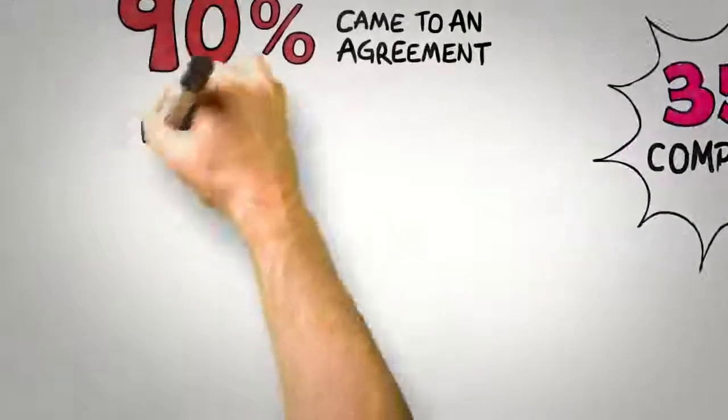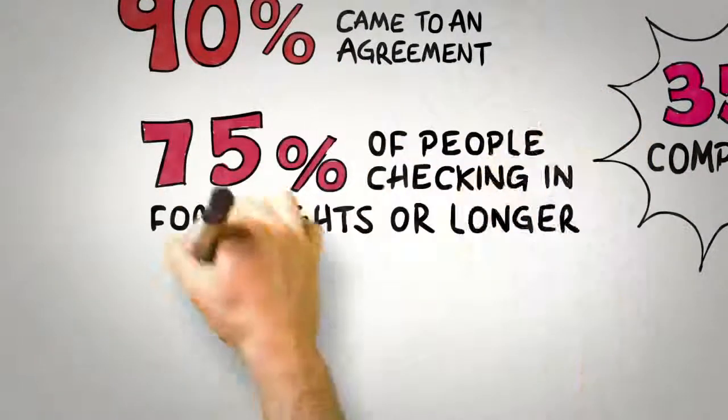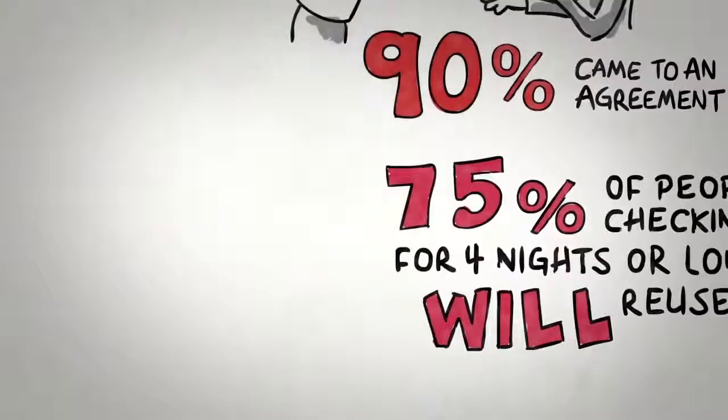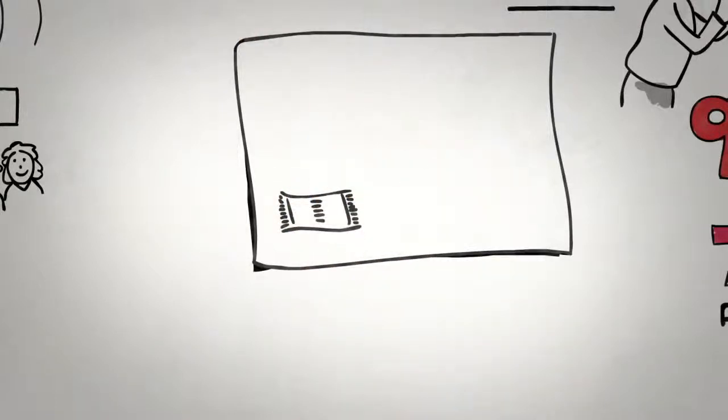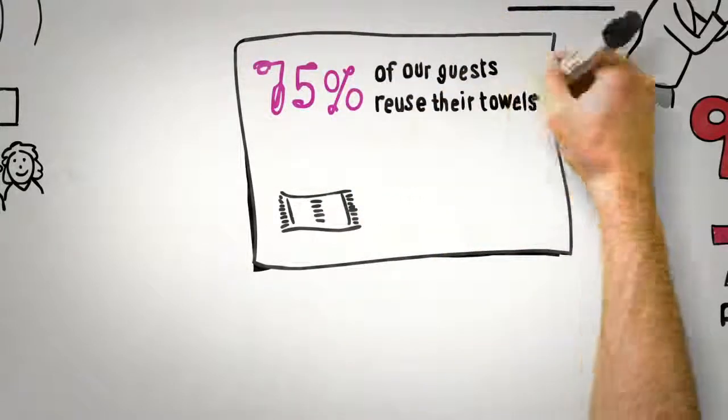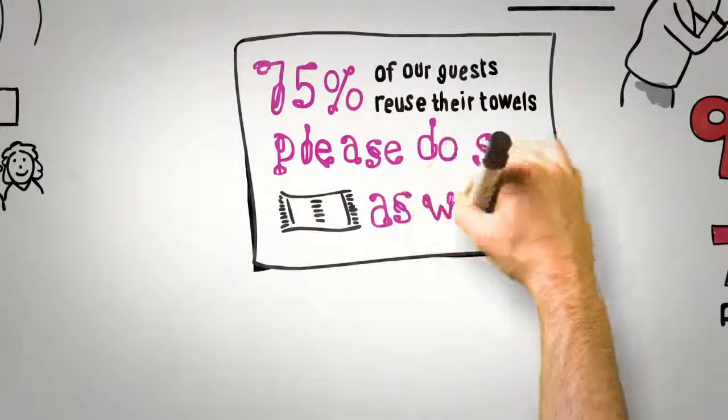Well, it turns out that about 75% of people who check into a hotel for four nights or longer will reuse their towels at some point during their stay. So what would happen if we took a lesson from the principle of consensus and simply included that information on the cards and said that 75% of our guests reuse their towels at some time during their stay? So please do so as well. It turns out that when we do this, towel reuse rises by 26%.